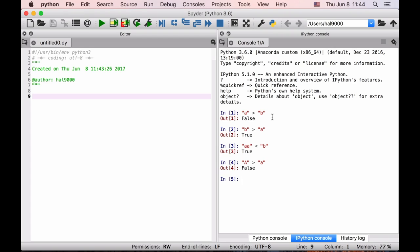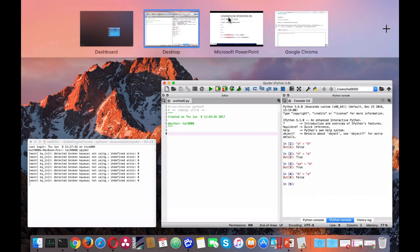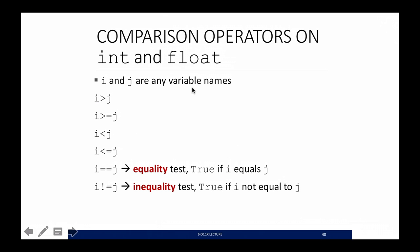And actually, if you want to dig into this later, you can see that in the Unicode, well, ASCII, the Unicode, Unicode, not corn, order, Unicode, Unicode order, that's hard to say, the Unicode order, that the capital letters actually come before the small letters in terms of their code that Python is using to order them here.